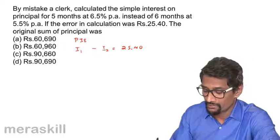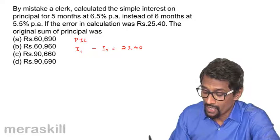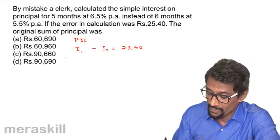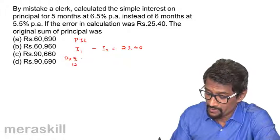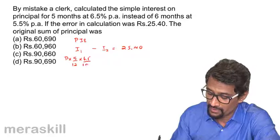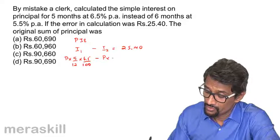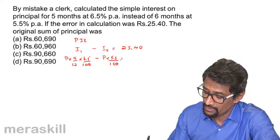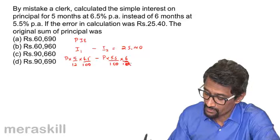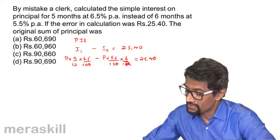So I₁ may be P into 5 by 12 as the period, into 6.5 by 100, minus P into 5.5 upon 100 into 6 by 12. So let's calculate what it is.